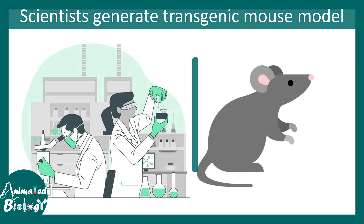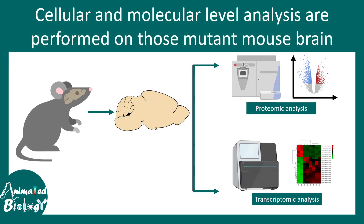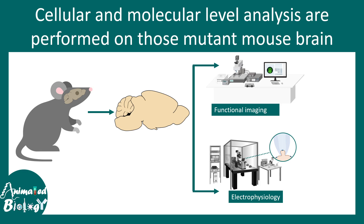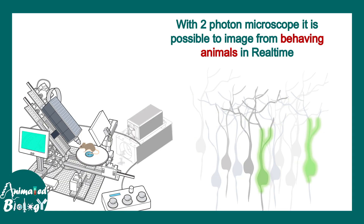One approach is to generate transgenic mouse models, which are subjected to behavioral test analysis. Sometimes these mouse models show autism-like behaviors. Once behavioral paradigms are established, the brain tissue is used to understand changes at a protein or transcript level. Proteomic and transcriptomic analyses can be performed from these mutant brains. Functional assays like functional imaging, calcium imaging, and electrophysiology can also be performed to understand circuit functionality in these autism spectrum mutant mice. With two-photon microscopy, it is possible to image behaving animals in real time.